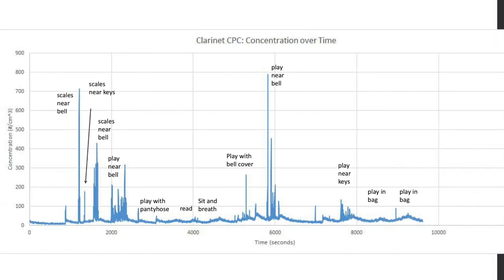Here is the same chart for the clarinet. When you look at the left-hand side of the screen you can see that the scales are near the bell, and then you see scales near the keys with an arrow there. This is sharing with you the differences between what is being emitted out of the bell and what is coming out of those keys. What is coming out of the bell is actually a larger aerosol emission than what is coming out of the keys.